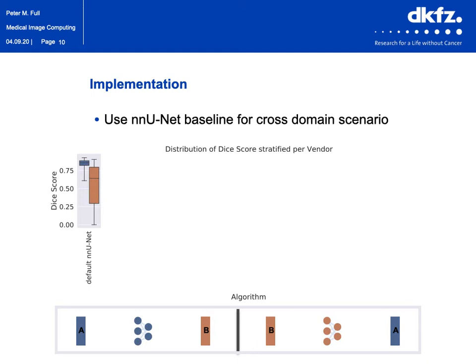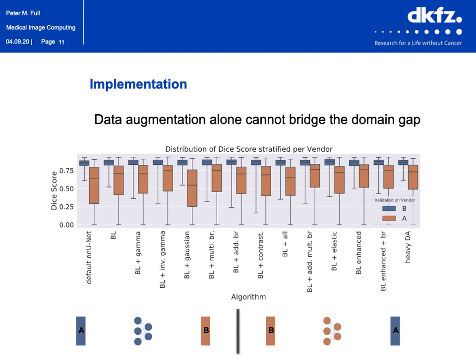For that first experiment, we only used the default NNUnet settings. The obvious next step was to adjust the data augmentation — increasing ranges and adding more augmentation techniques. These experiments showed good results in one direction, but the other direction was always unsatisfying. Our first finding was that adjusting data augmentation alone was not enough to bridge the domain gap.